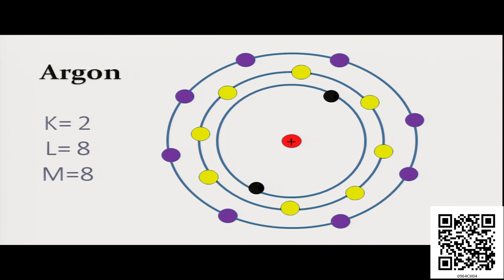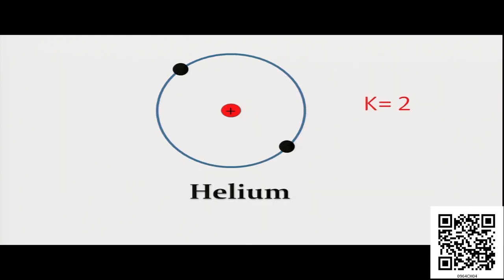So any element having eight electrons or which can achieve eight electrons in their outermost shell will have a stable electronic configuration or will be very much stable in nature. But there is an exception — in case of helium, it contains only two electrons. The number of shells is only one, that is the K shell, and it contains two electrons. As you know, the maximum capacity of K shell is two. That's why we say helium is completely filled and it also shows very less chemical reactivity — we call it a noble gas or inert gas.